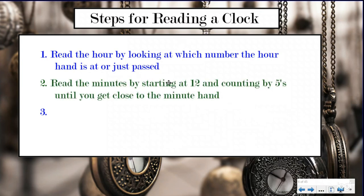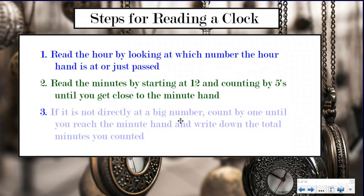Number two, you're going to read the minutes by starting at 12 and counting by fives until you get close to the minute hand. And then if your minute hand is not directly at a big number, you're going to count by ones until you reach the minute hand. And then you can write down the total minutes that you counted. So we're going to be using skip counting. If you've already memorized the numbers and your multiples of five, then go ahead and use that. But these steps are for people who are really trying to take it at a basic level. So let's take these steps and apply them in a problem.